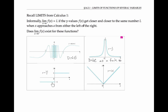In this third example, the limit does not exist. Because as we approach zero from the left, the y values equal and so approach negative one. But as we approach zero from the right, the y values equal one. So the limits don't match, and therefore the limit doesn't exist.